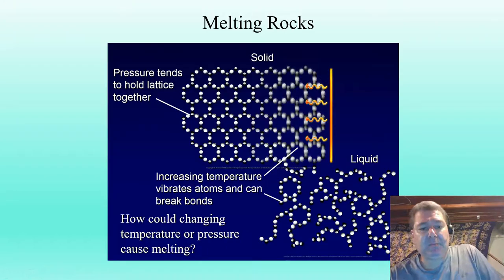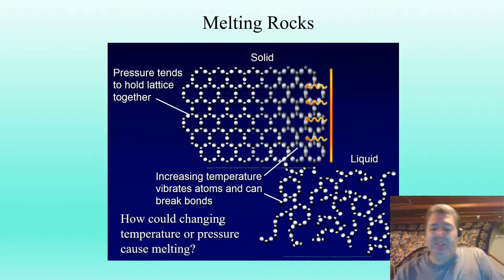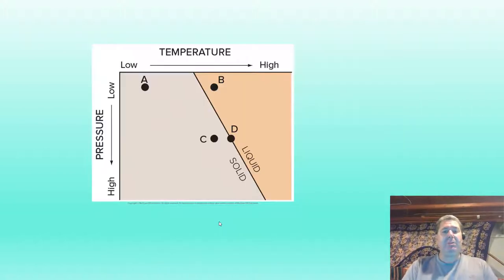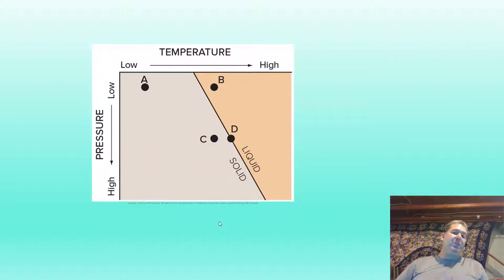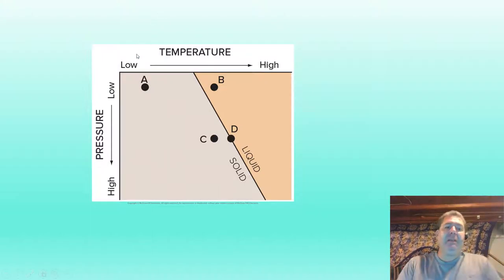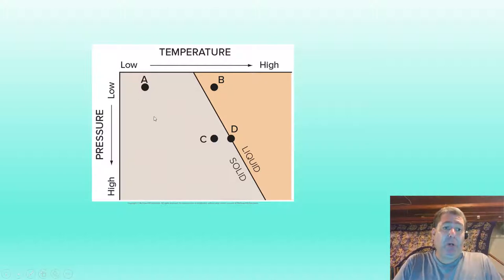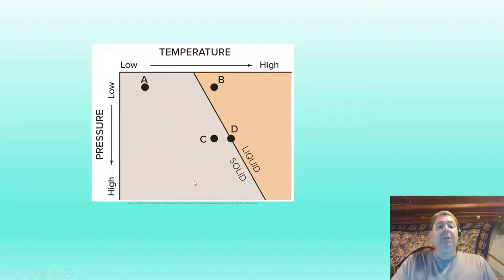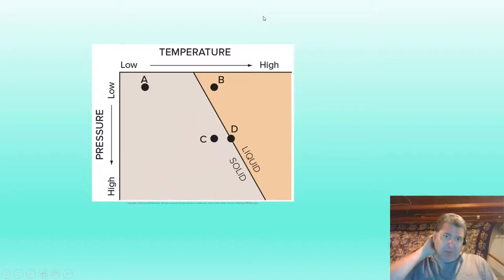How could changing temperature or pressure cause this melting? Obviously adding more temperature could cause melting. Here is a temperature and pressure gradient going down into the earth. Two things you cannot untie from each other: as you go deeper in the earth you get higher pressure and higher temperatures. The deeper you go, the more pressure and the higher the temperatures.